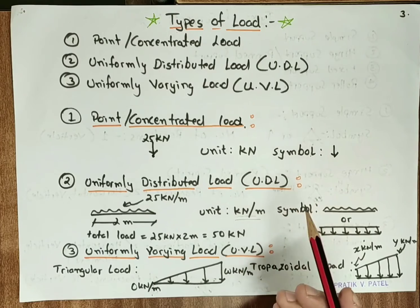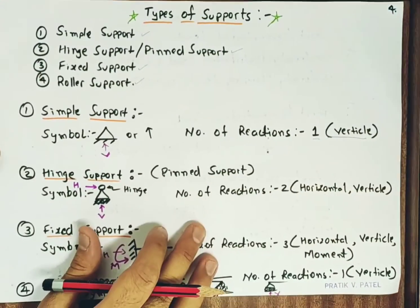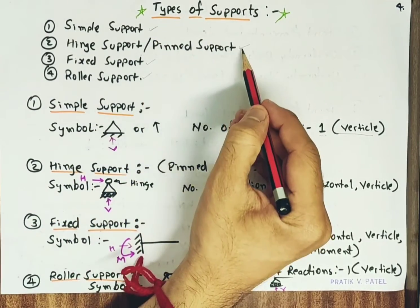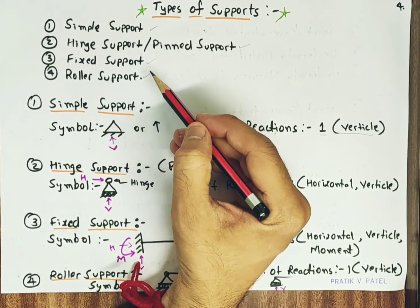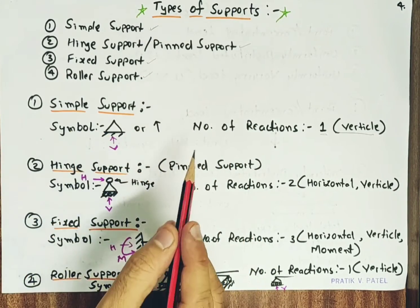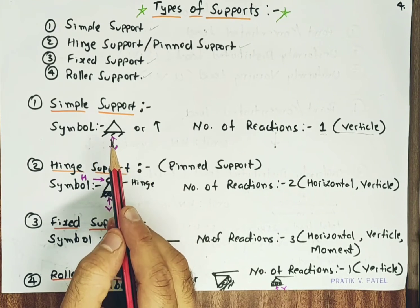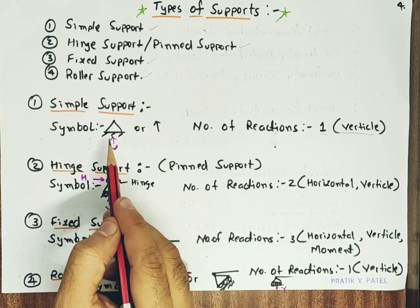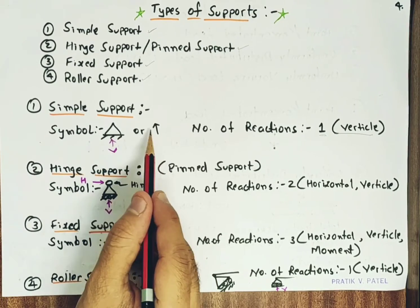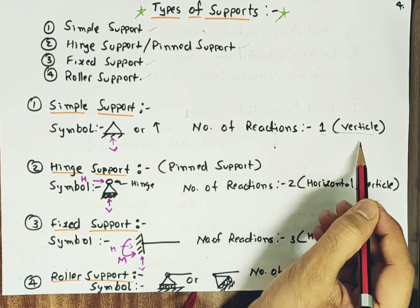Next, we will continue with types of support. There are four basic types of support which any beam can have: simple support, hinge support, fixed support, and roller support. For simple support, the beam is freely supported and there is no monolithic construction between the beam and the support. Only a vertical reaction can be developed — the beam is not allowed to move in the vertical direction. It is symbolized by a triangle figure, and the number of reactions is 1, which is vertical.